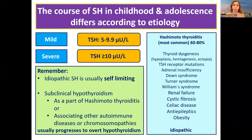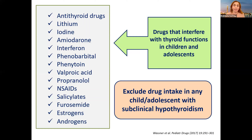On the right-hand side you can see a very long list of etiologies that could predispose to subclinical hypothyroidism, with Hashimoto thyroiditis being on top of the list — about 60 to 80 percent of cases. Please remember that idiopathic subclinical hypothyroidism in children is usually self-limiting, while subclinical hypothyroidism as part of Hashimoto's or associated with other autoimmune disease or chromosomal aberration usually progresses to overt hypothyroidism.